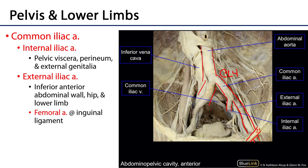The internal iliac artery — oftentimes referred to by clinicians as the hypogastric artery — is going to ramify within the pelvis to serve the walls of the pelvis, pelvic viscera, as well as leave the pelvis to supply the hip joint and associated muscles, the perineum, and portions of the proximal lower limbs with blood. So if you hear someone refer to the hypogastric artery, it's the same thing as the internal iliac artery.